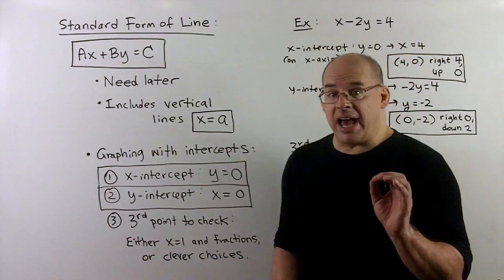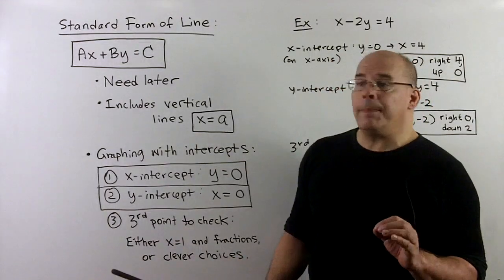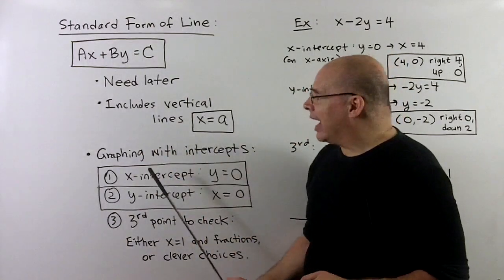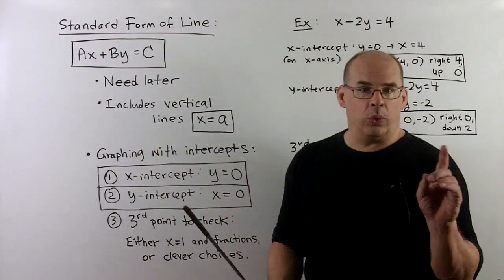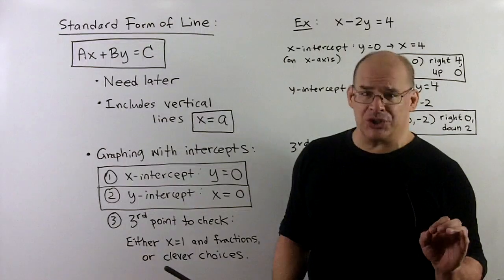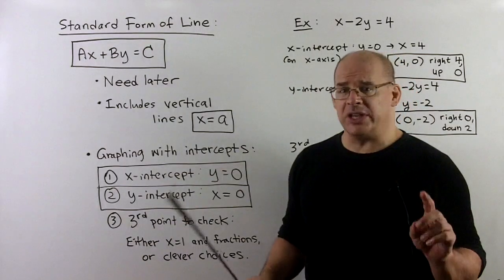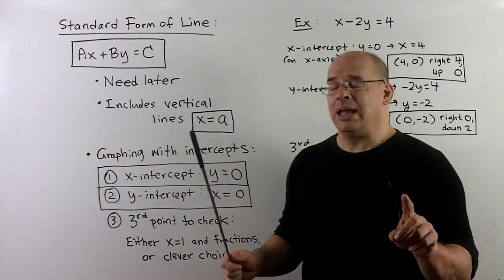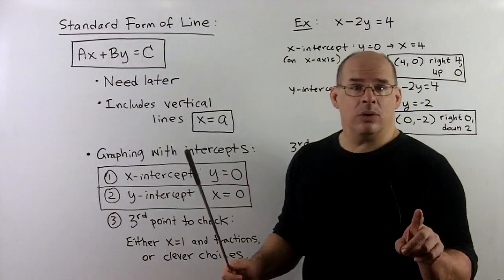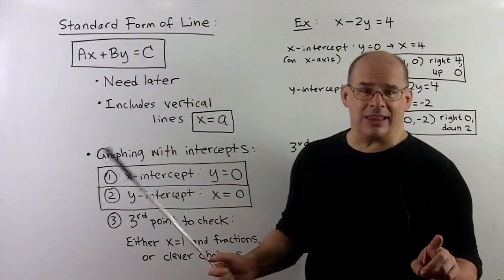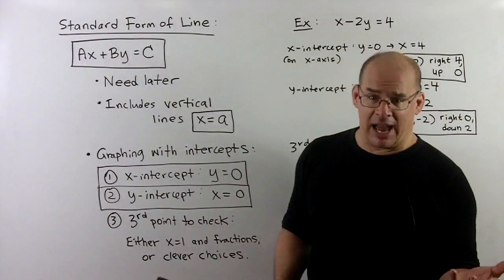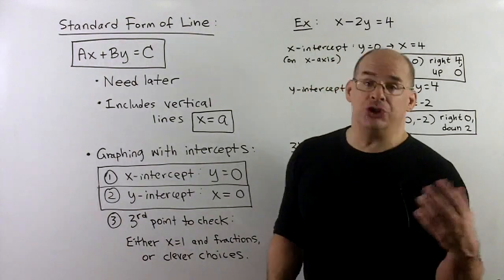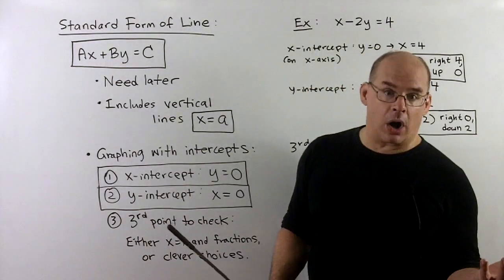For the task we want to do now — if I have the standard form of a line, we can directly get the x and y intercepts. Those will be two points on our line, and once I know those, I can get the graph of a line just by connecting the dots. Then we want a third point just to check our work.